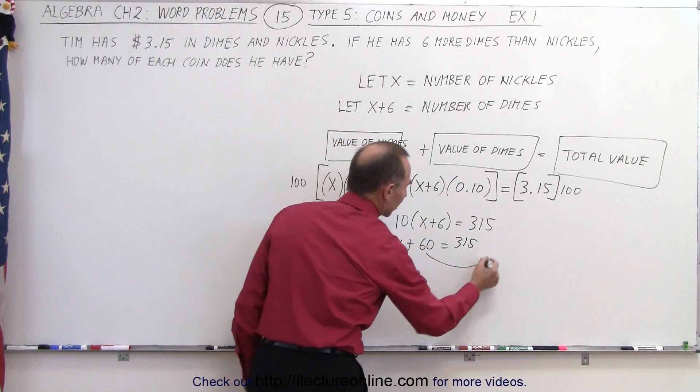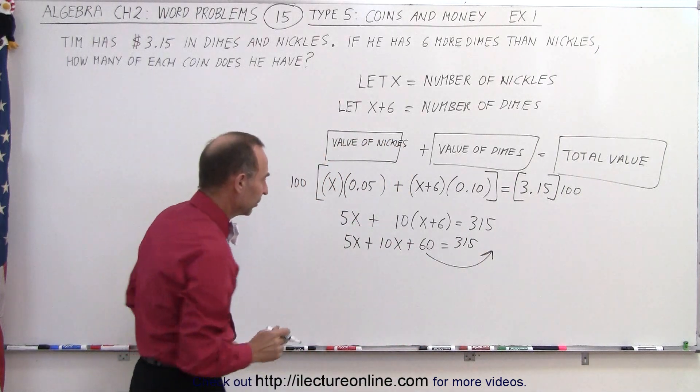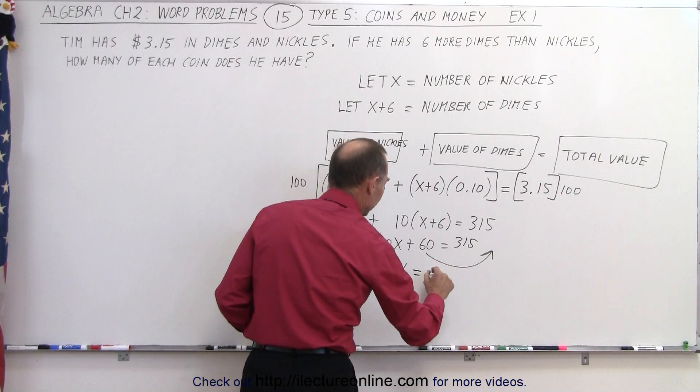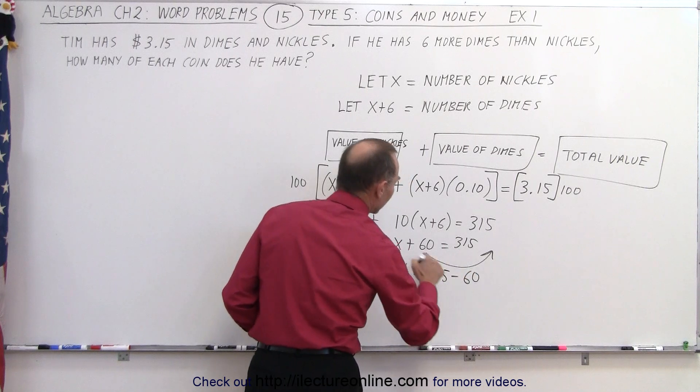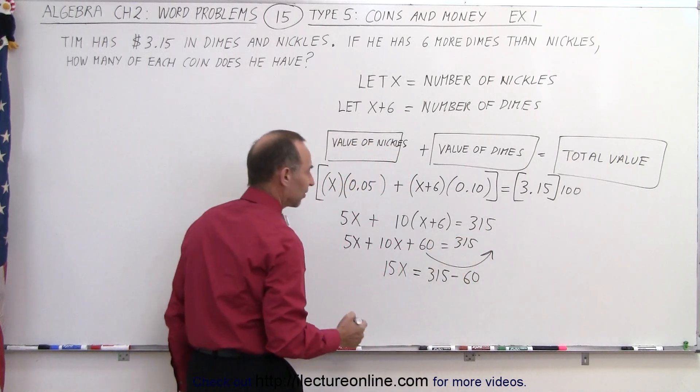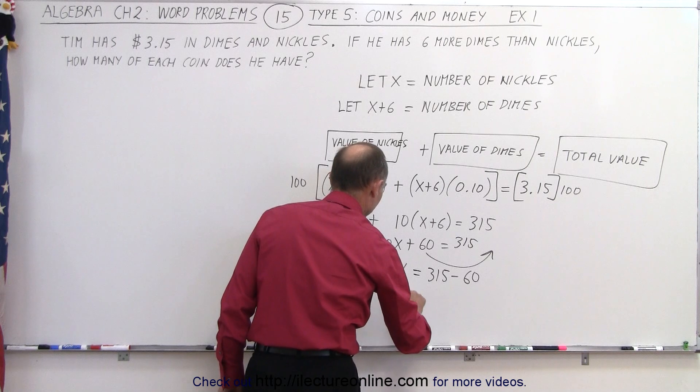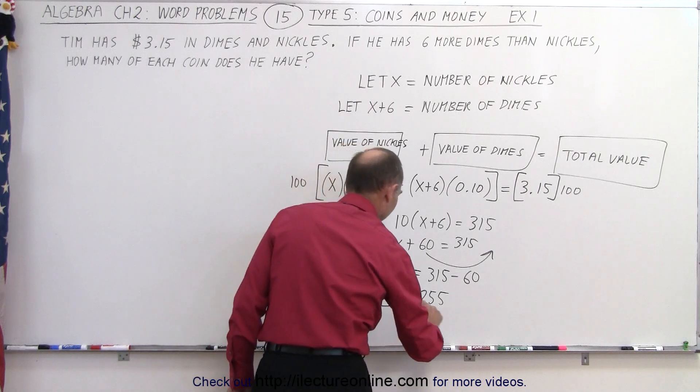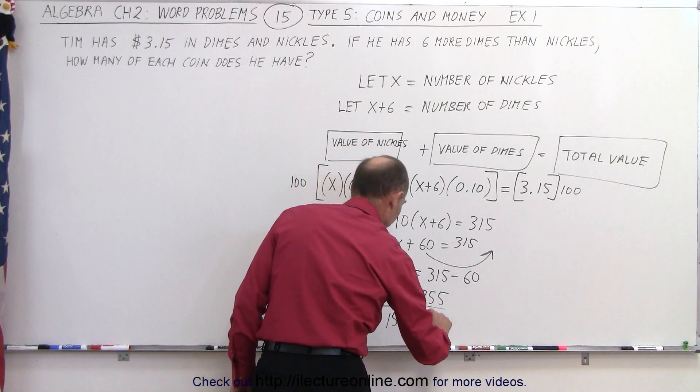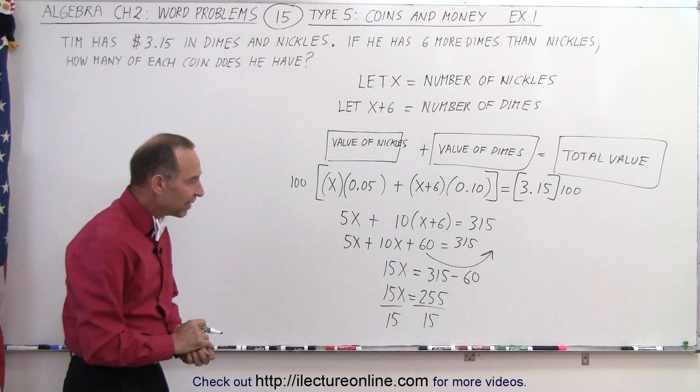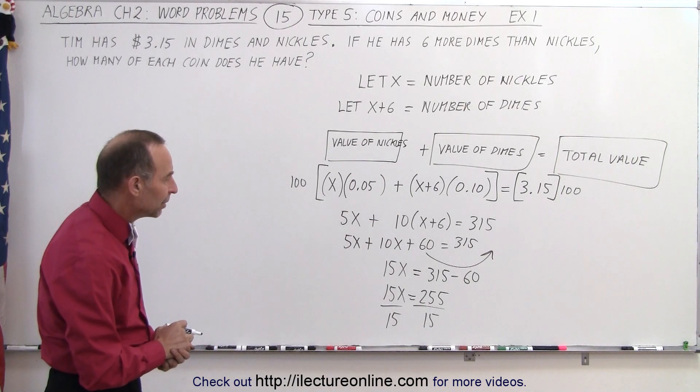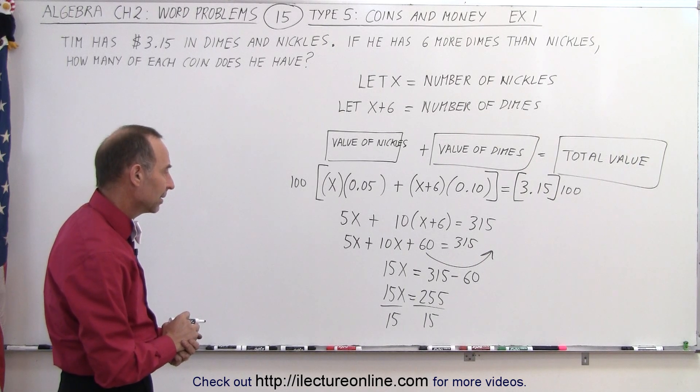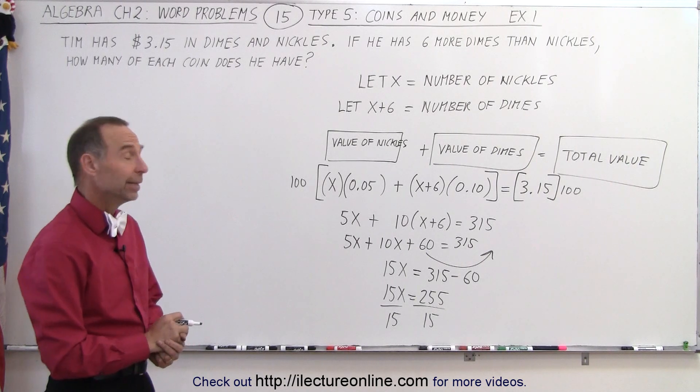Now we move the 60 to the other side because we want to separate the variables from the numbers. So we have 5x plus 10x, that's 15x on the left side is equal to 315 minus 60 because when we bring the plus 60 to the other side becomes minus 60. So we have 15x is equal to 255 and finally we divide both sides by the numerical coefficient of x. So 15 times 15, that would be 225, 15 times 17, yeah that would be it. So therefore,